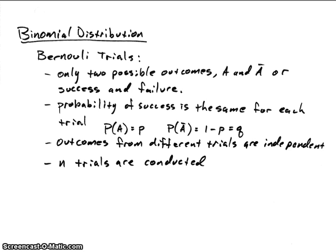The second property is that the probability of success is the same for each trial. So every time you do the experiment, it has the same probability of success. We'll call that little p — probability of success. And the probability of failure, which is 1 minus p, we'll call q.